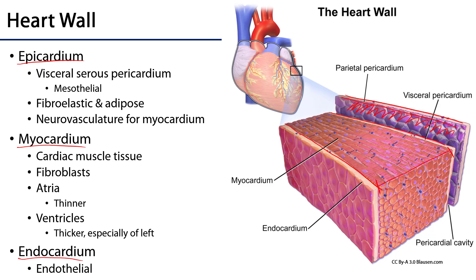Any of these layers — the epicardium, myocardium, or endocardium — can be the target of disease, a pathological process, or injury. So we can have pericarditis, epicarditis, myocarditis, or endocarditis. While all of these etiologies can be very different and their prognoses may differ, they can all be part of some pathological process.